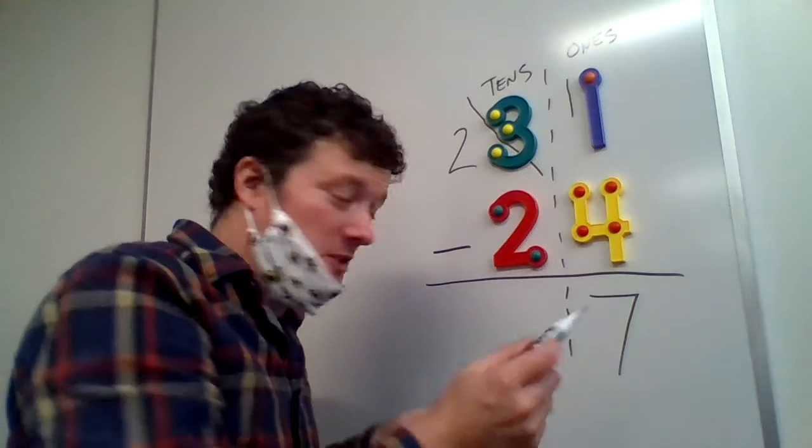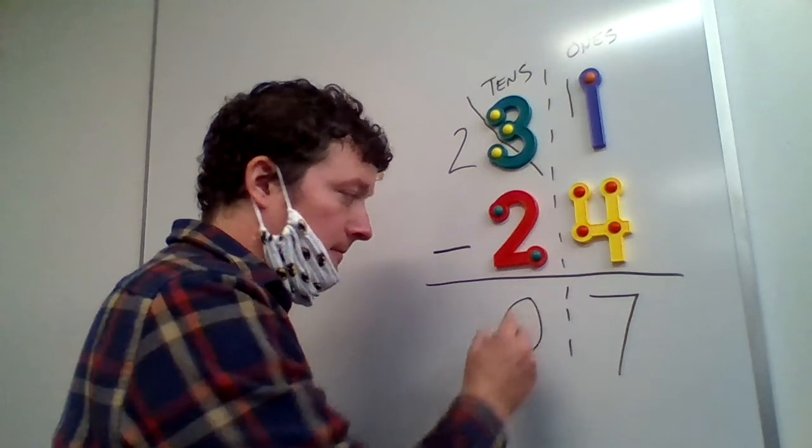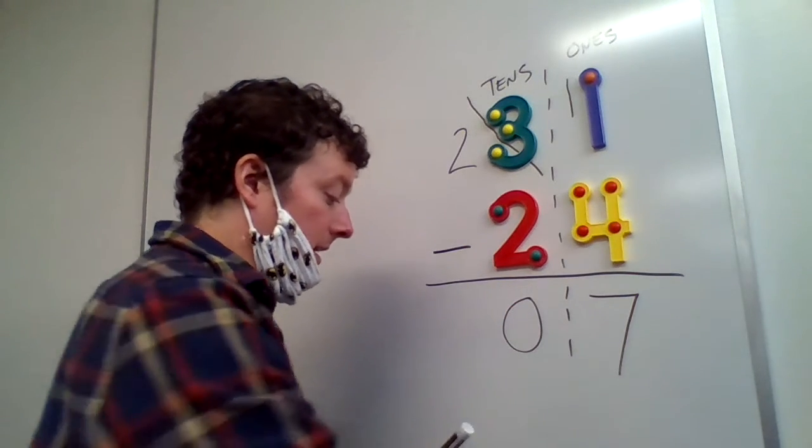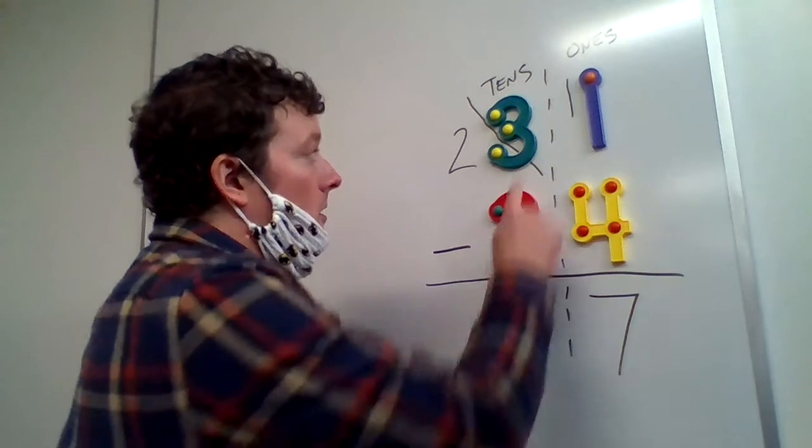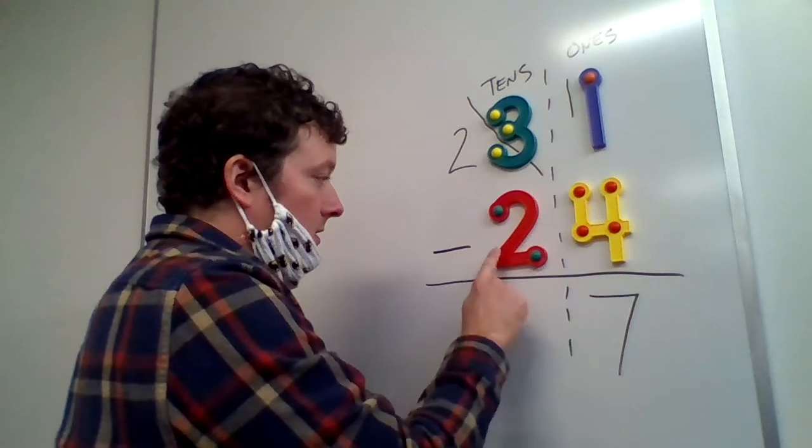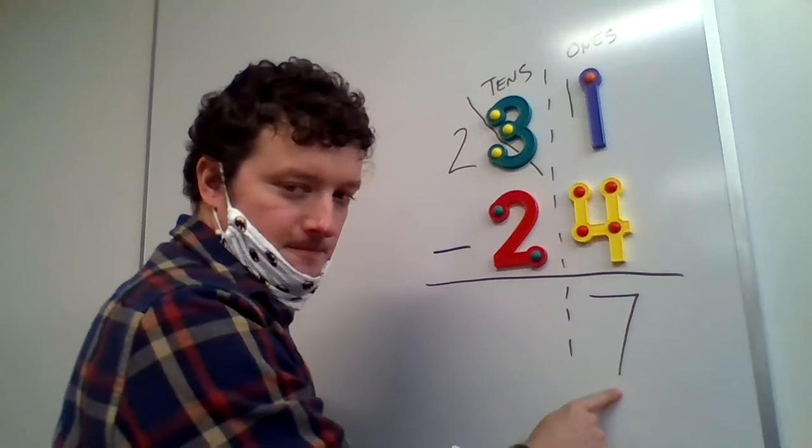So you can, if you want to, you could write a zero or you could leave it blank. And we're going to leave our tens column blank. So 31 subtract 24 equals seven.